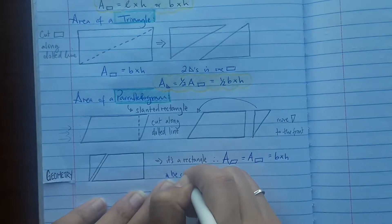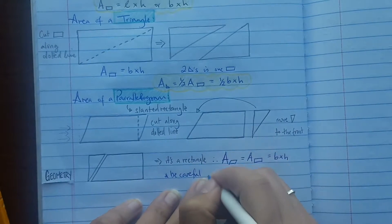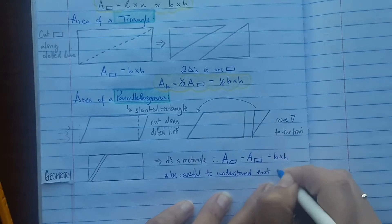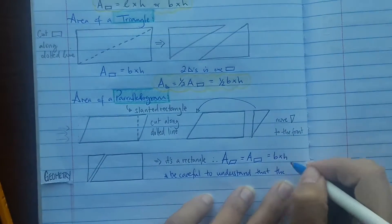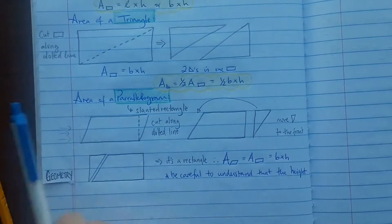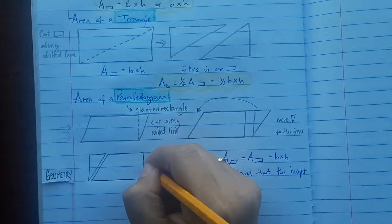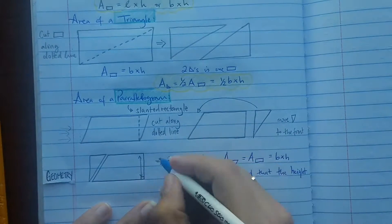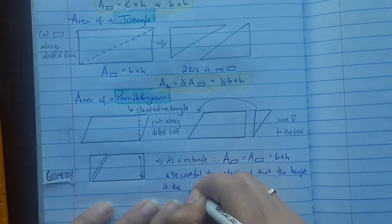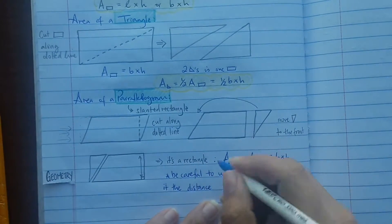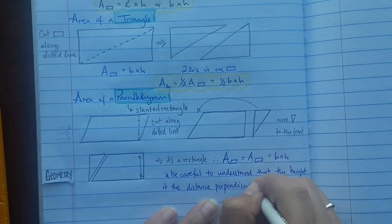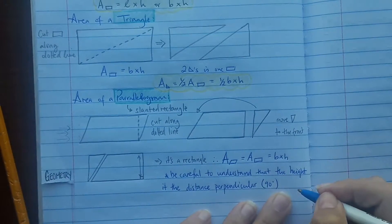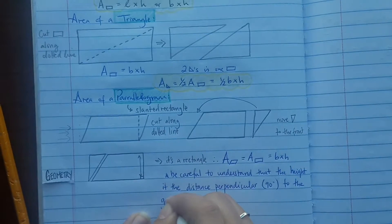Be careful to understand that the height is the distance perpendicular to the ground, and not the slanted height. Perpendicular means to go straight up and down — it meets at 90 degrees.